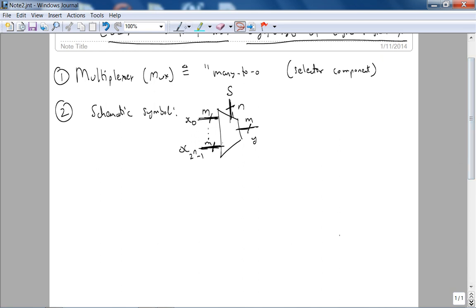Let's look at some examples. The simplest case, example one, is what is called a two to one MUX. In this case, let's do one bit wide. So here's a select bit, here is x0, here is x1, and then this is y.